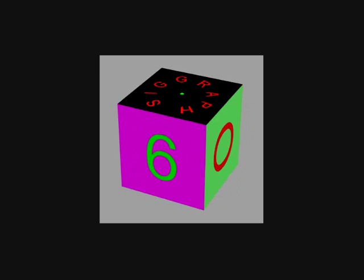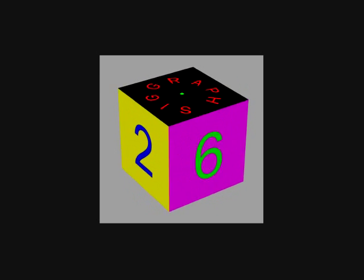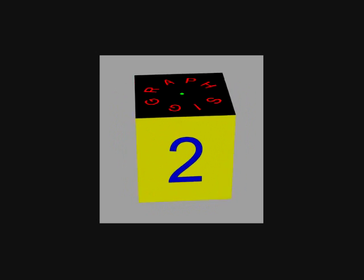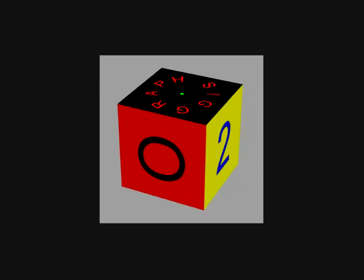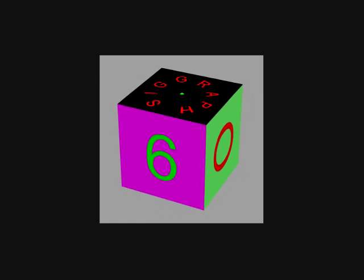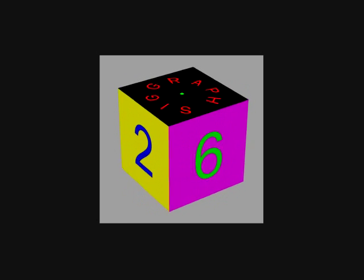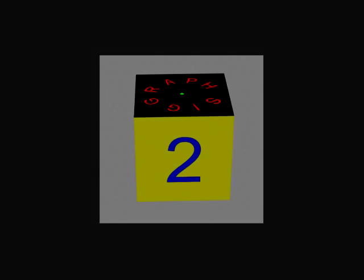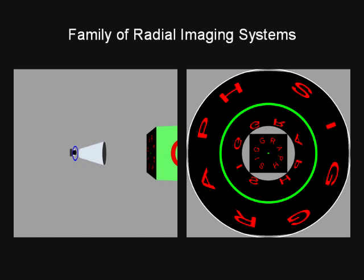To see the change in captured scene information, consider a cube with SIGGRAPH written on the top face and 2006 written over its side faces. In this configuration, we see that the top face is seen multiple times, which allows us to recover structure from a single image.